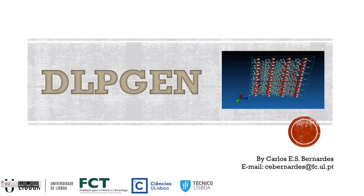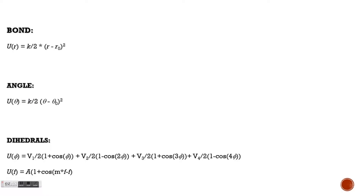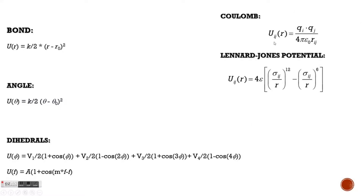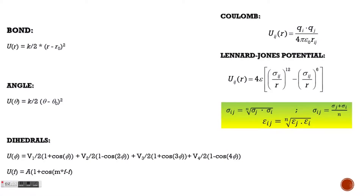DLPgen is based on, or uses, OPLS-like force fields. To do so, it considers bonds and angles as harmonic oscillators, the dihedrals as a cosine function or Fourier series, and the intermolecular interactions using atomic point charges located at the nuclei positions and Lennard-Jones potentials. It's also possible to use Drude models with the program. Regarding the Lennard-Jones potentials, the program can use mixing rules based on geometric and arithmetic means, but geometric means is the default since it's based on OPLS force fields.